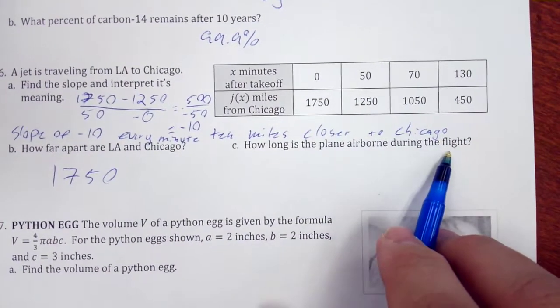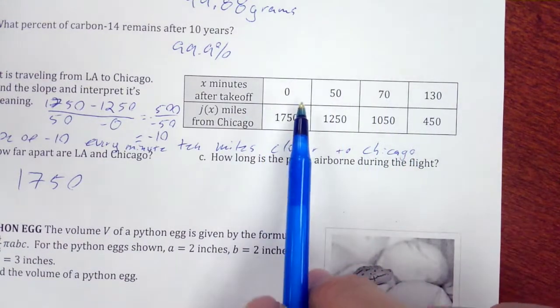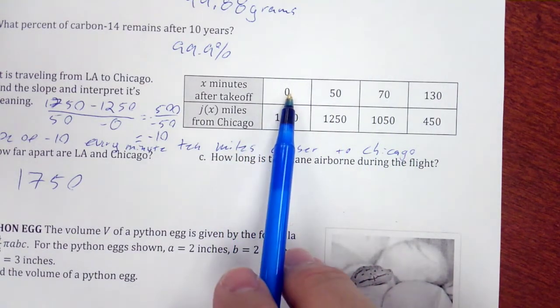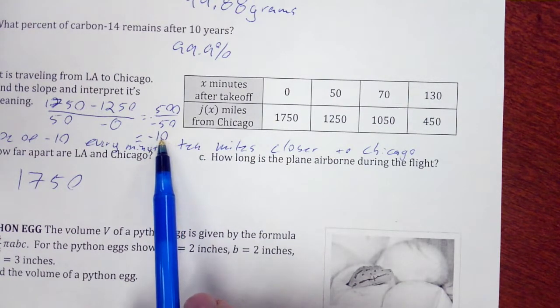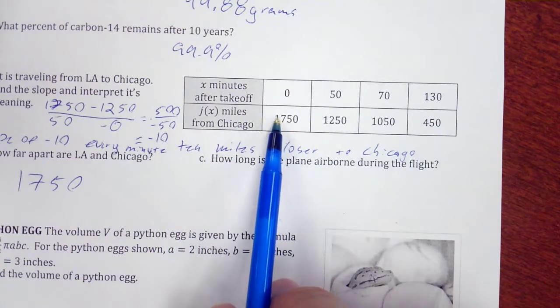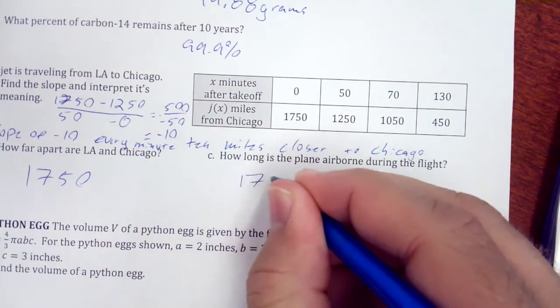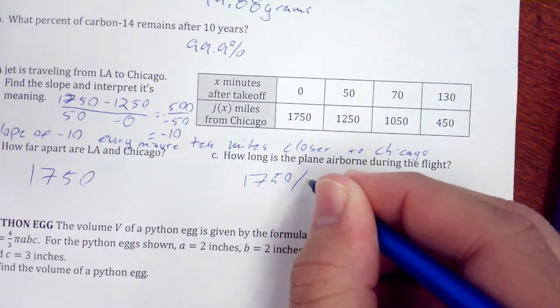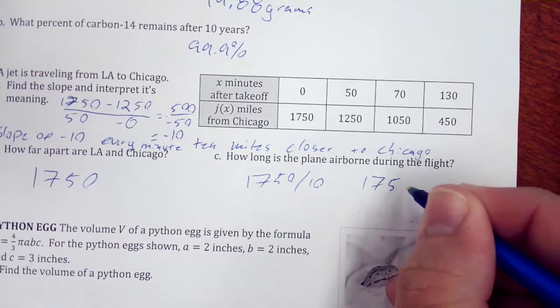How long is the plane airborne during the flight? So we need to figure out our slope, which is 10 miles every minute. So I'm just going to go 1750 divided by 10, which gives me 175 minutes.